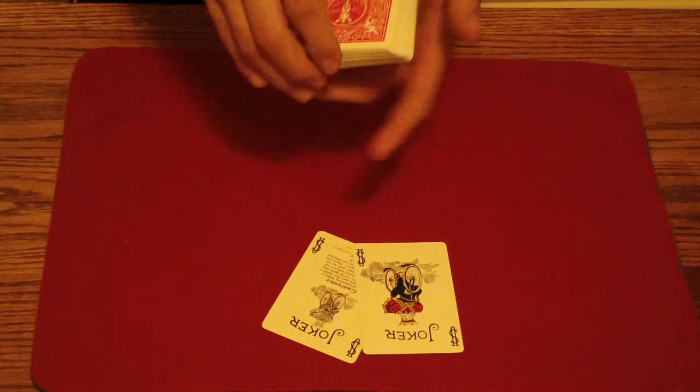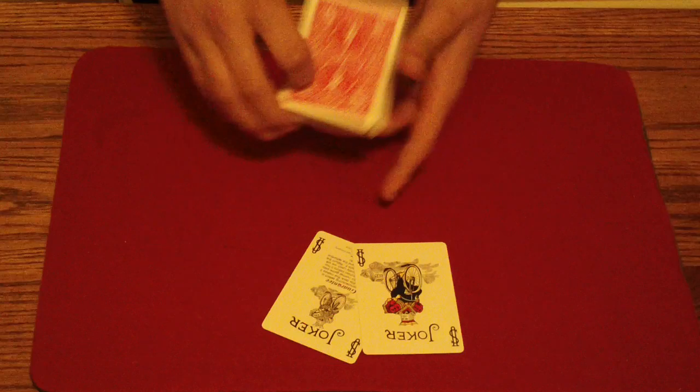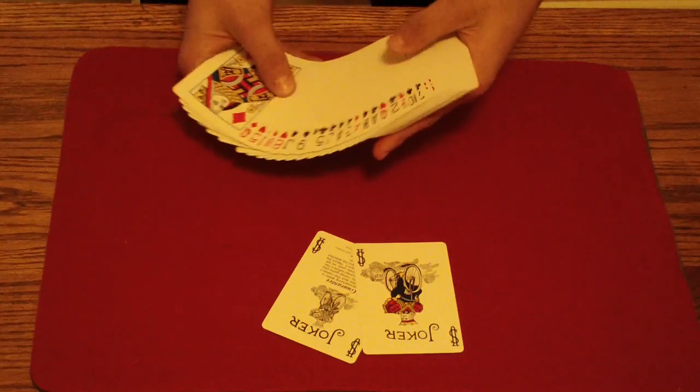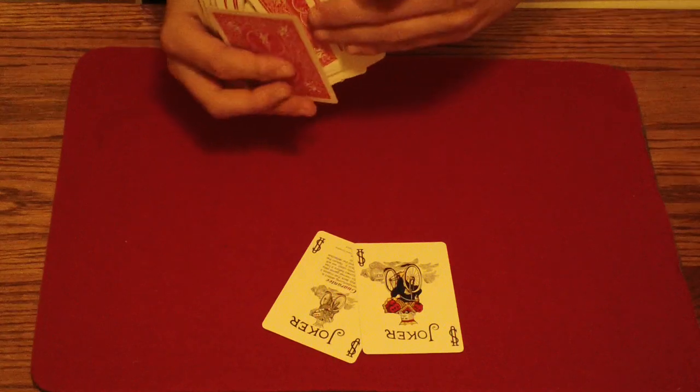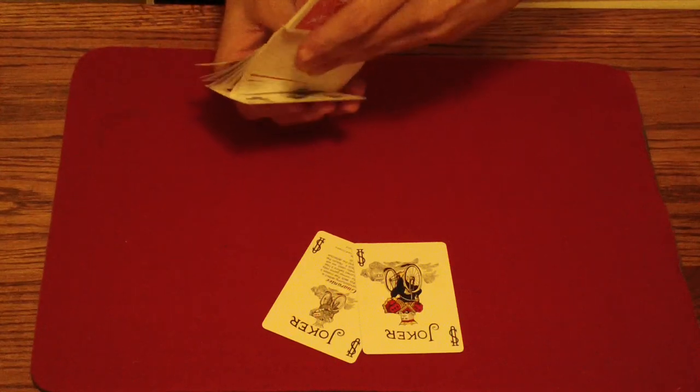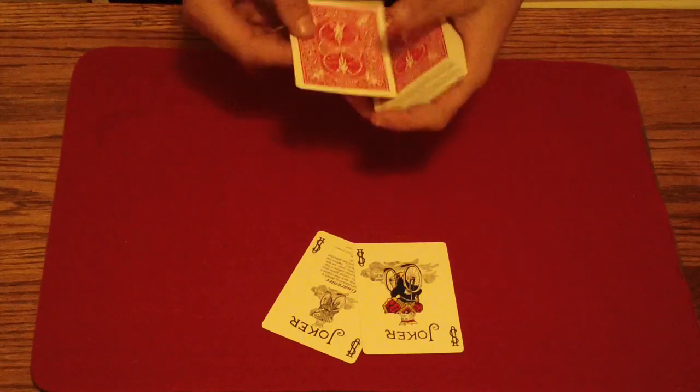If my tutorial right there didn't help, then there are thousands of them out there. All you're doing is they're calling out a card, the Seven of Clubs. You're pulling the Seven, flipping it back, feeding the cards above, and controlling it to the top.